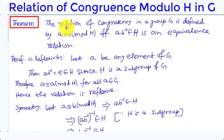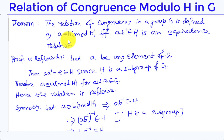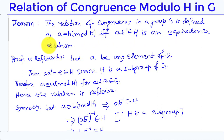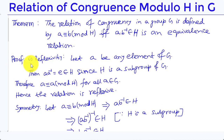Theorem: The relation of congruency in a group G, defined by A ≡ B (mod H) if and only if A·B⁻¹ ∈ H, is an equivalence relation. Proof: To prove the theorem, we have to show that the relation of congruency is reflexive, symmetric, and transitive.